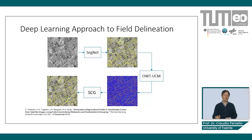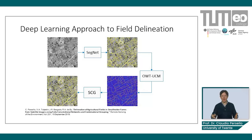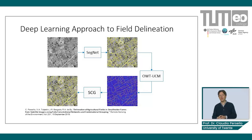Finally, we adopted a method called Single Scale Combinatorial Grouping, which scans the entire UCM hierarchy and automatically selects the optimal scale to obtain field segments. If you are interested in learning the details of the method, please look at the paper reported at the bottom of the slide.